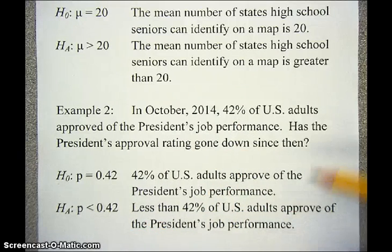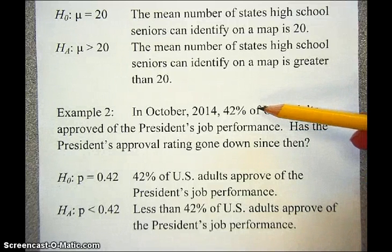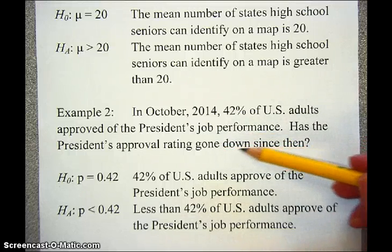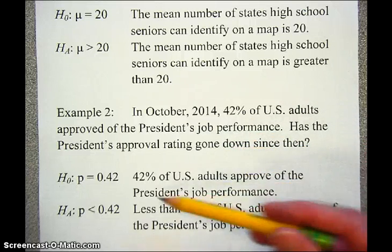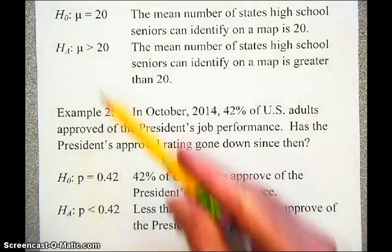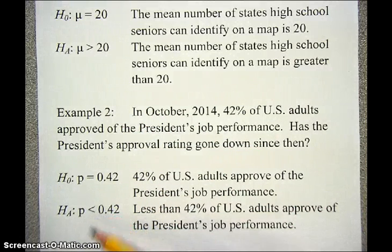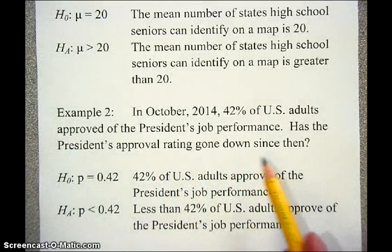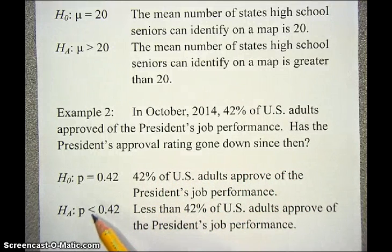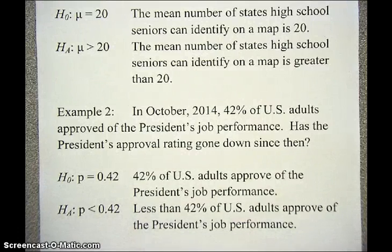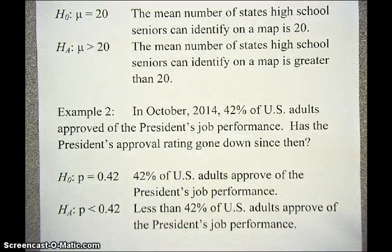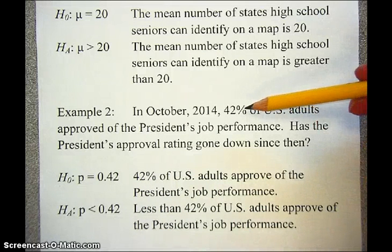So when you're reading these problems, look for a specific value that could be your null hypothesis value, and then look for some hint as to whether the alternative should be greater than, or less than, or perhaps just not equal to. For example, 'Is there evidence that the president's approval rating is different?' would give you a not-equal-to sign. The kind of alternative hypothesis you're going to get should be implicit in the question asked, and the null hypothesis value generally comes from the specific value quoted in the problem.